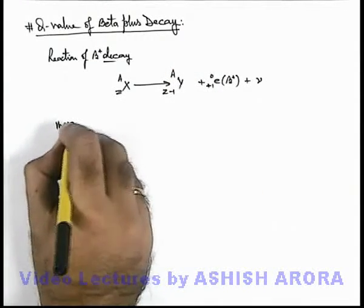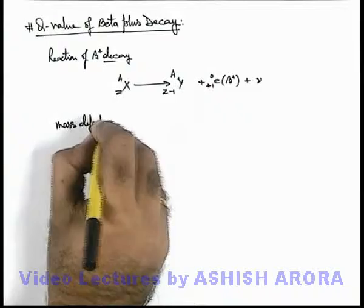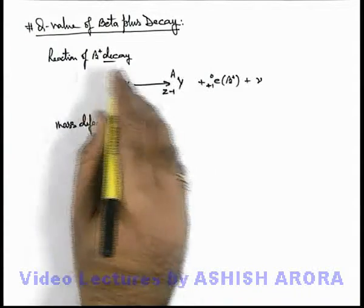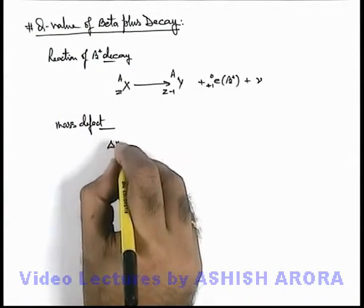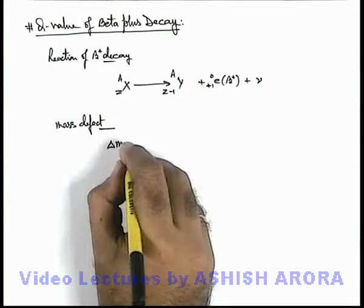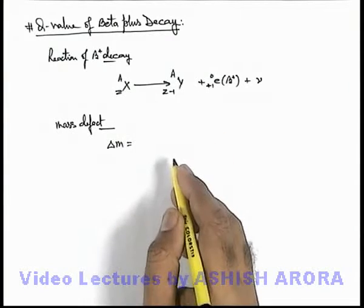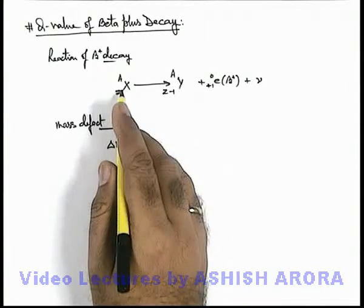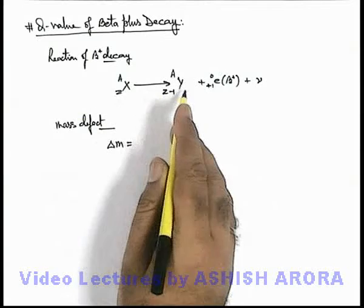If we calculate the mass defect of this reaction, of beta plus decay, similar to the previous case we need to be careful about subtracting the masses of electrons in atoms of X and Y.